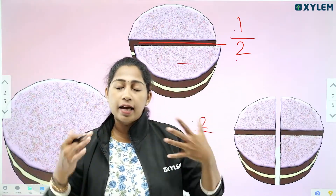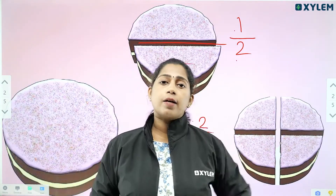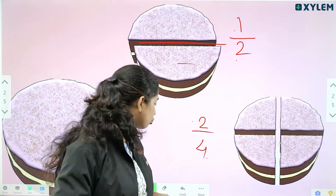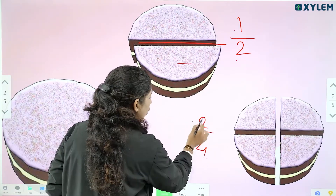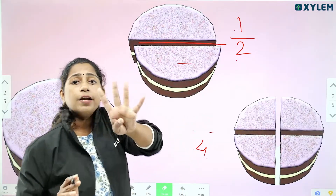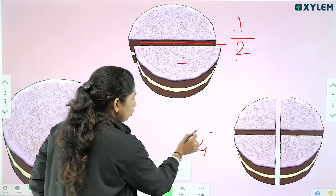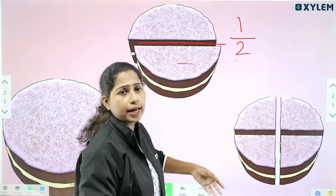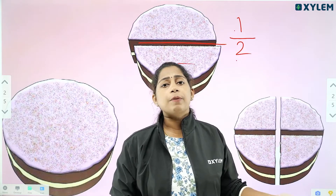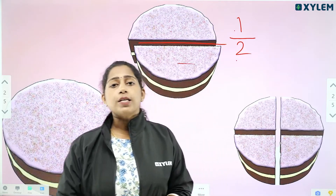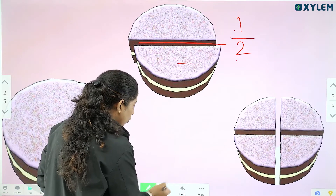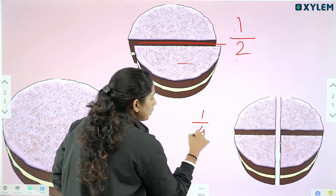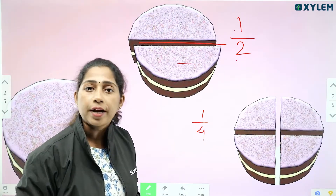Now let's have 4 pieces in the same cake. How to make 4 pieces? To make 4 pieces out of the cake, we can make 4 pieces. How to take 1 piece out of 4 pieces? Get 1 piece out of 4 pieces — that is 1 by 4.